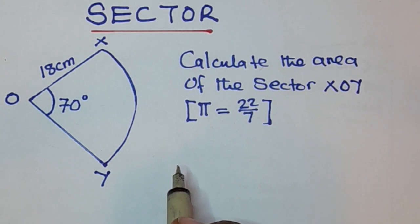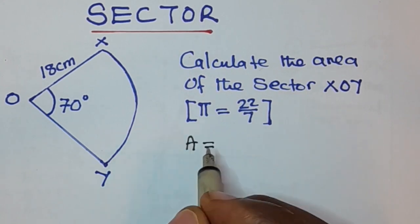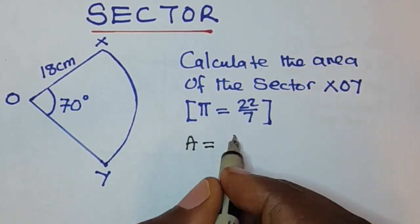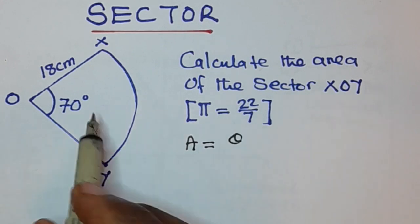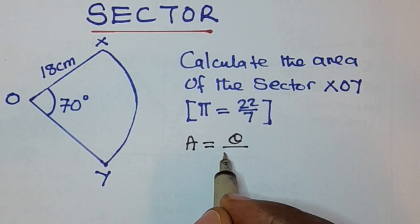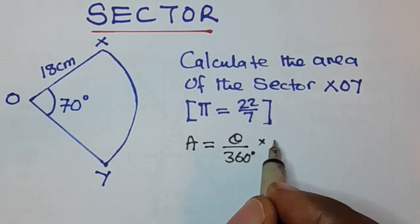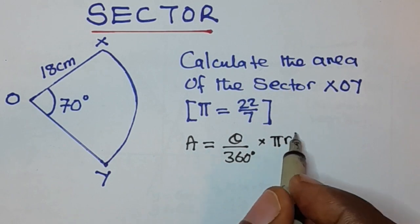So to find the area of a sector, we use the formula: area is equal to theta. Theta is the central angle here, then over 360 degrees times pi r squared.